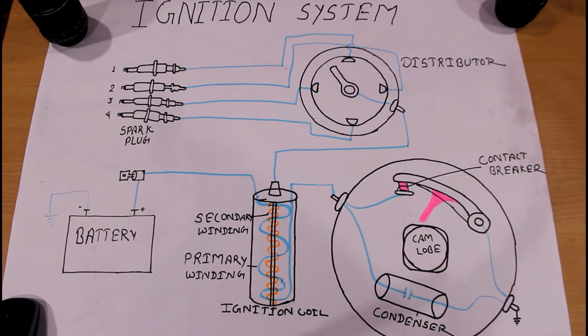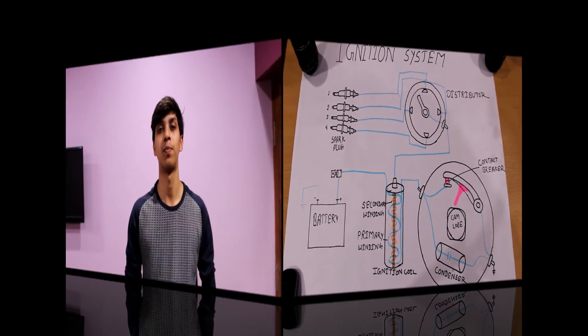This is the ignition system of an IC engine. One important thing to note: this ignition system works only for gasoline engines. For diesel engines, there is no ignition system, because diesel engines have a very high compression ratio. When the air-fuel mixture is compressed, it self-ignites and combustion takes place. There is no need for an ignition system in a diesel engine — it is only required in gasoline engines.